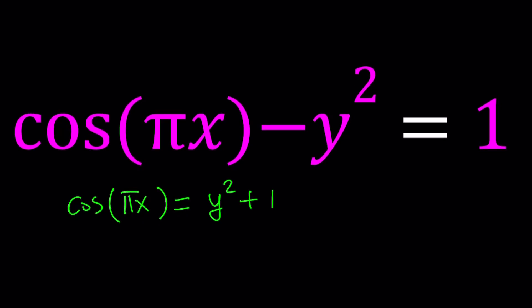Cosine is bounded from above and below. In other words, we can say that cosine of any angle is between negative 1 and 1 inclusive, if alpha is a real angle.